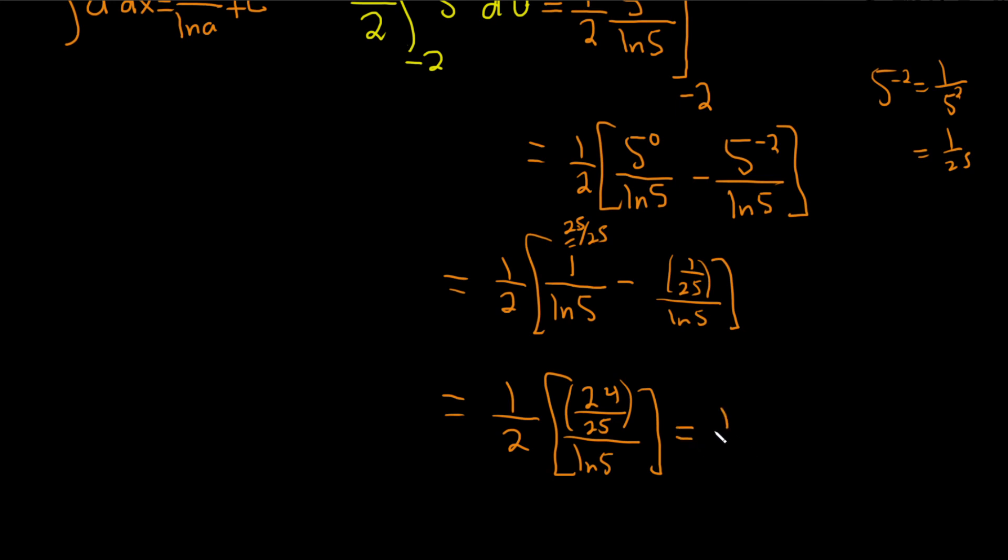This is equal to 1 half. We have 24 over 25 divided by ln 5. That's the same thing as multiplying by the reciprocal of ln 5. Remember, division is multiplication by the reciprocal. And look at this. These cancel. So you get 12 over 25 times 1 over the natural log of 5. And that would be the final answer.